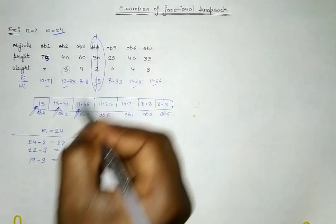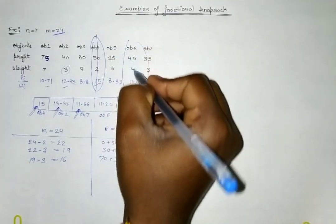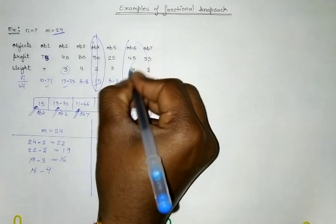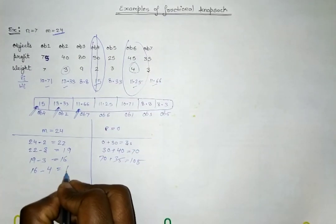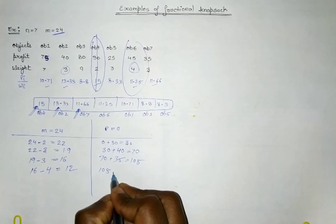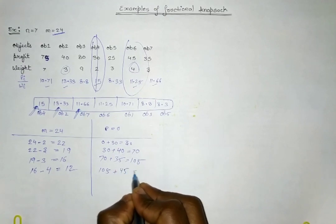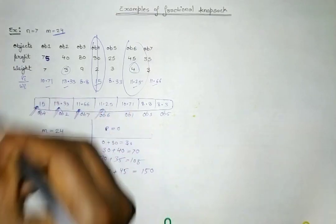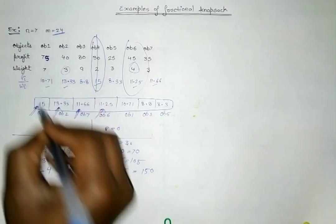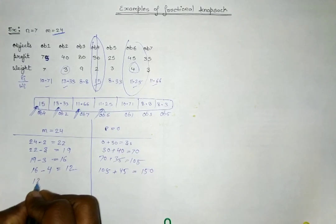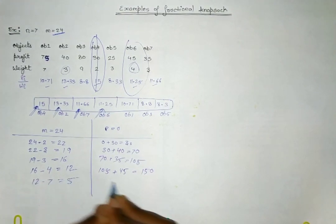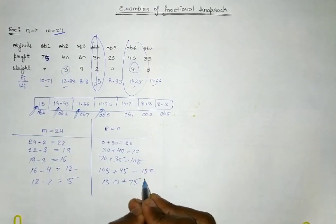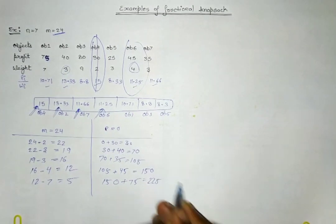Next is 11.25, Object 6. So 16 minus 4 equals 12, and profit becomes 105 plus 45 equals 150. Then Object 1 with weight 7 — we have capacity 12, so we can take it completely. 12 minus 7 equals 5, and profit becomes 150 plus 75 equals 225.